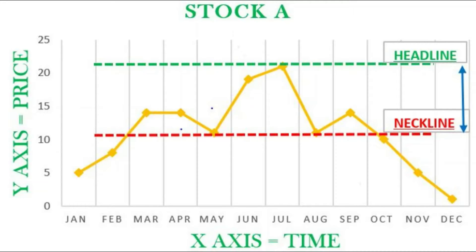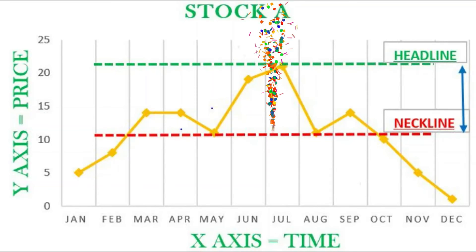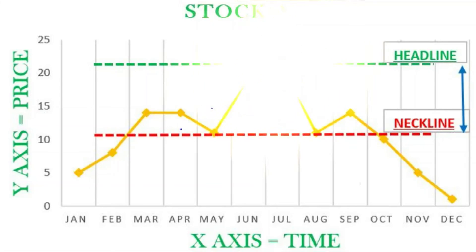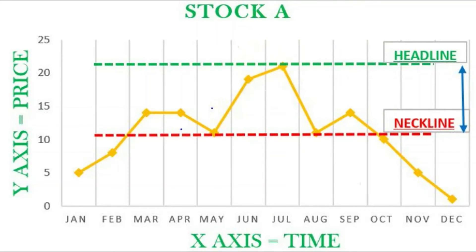The buyers come in and you see that first shoulder on the left — head and shoulders, you can see why. The sellers knock down that first shoulder right back to the neckline. Now the stock makes an attempt at a new high and gets there, but the sellers knock it down hard and there's no higher low, no upward trend line — it fails all the way back down to the neckline.